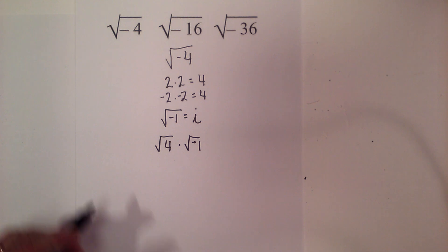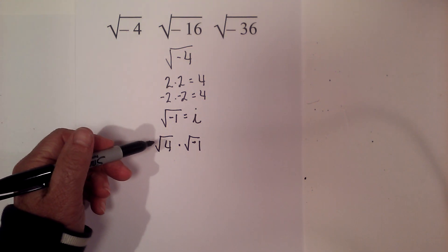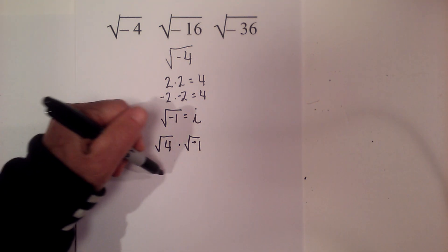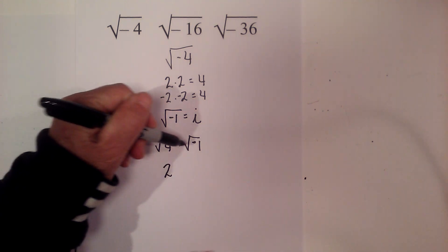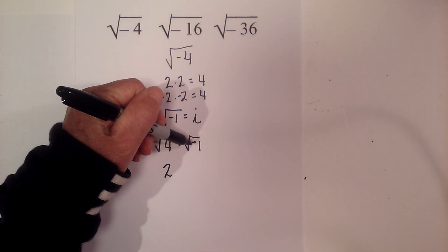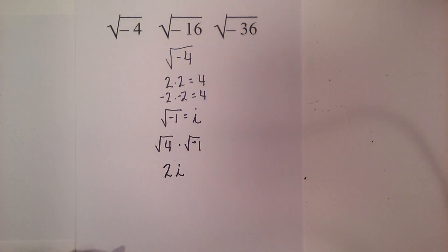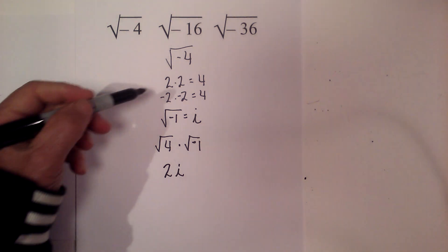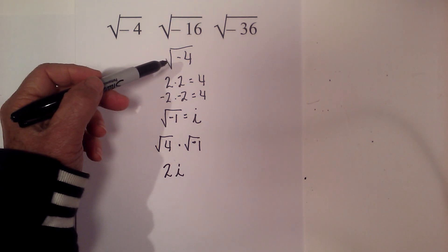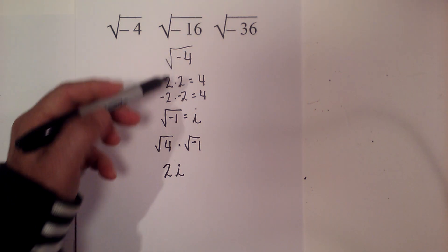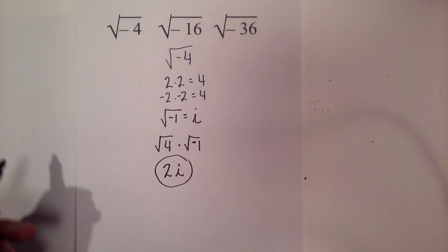If we simplify, we know that the square root of 4 is 2, and the square root of negative 1 is i. So the square root of negative 4 simplifies to 2i.